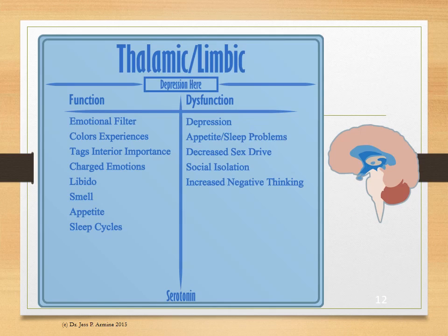The limbic system — depression lives here. The limbic system is where you have your emotional filter, your charged emotions, your libido, your sense of smell, your appetite, your sleep cycles. This is the area that colors your experiences, assigning importance to them, and this is also why when you smell certain things, you relive certain emotions. When it's dysfunctional, there's depression, appetite and sleep problems, decreased sex drive, social isolation, and increased negative thinking. Serotonin is the main neurotransmitter that runs this area.